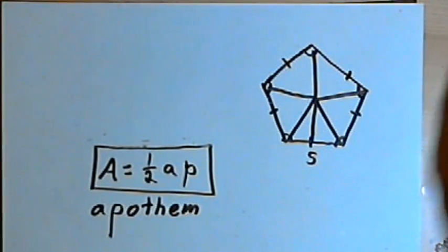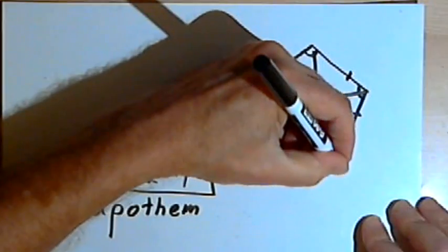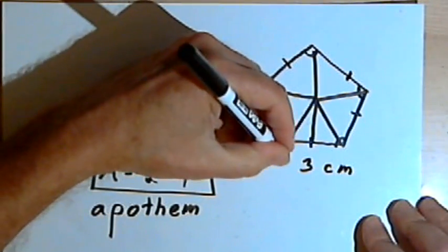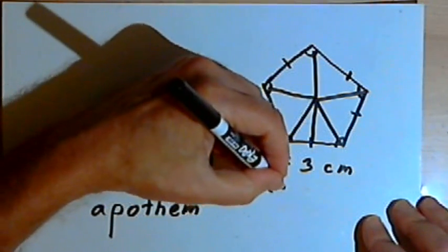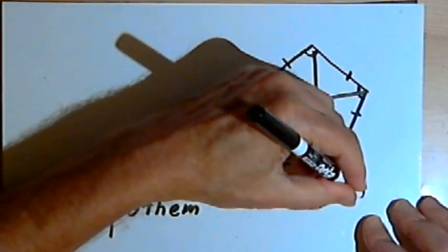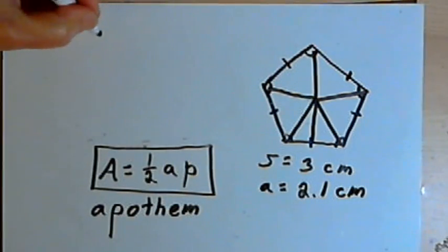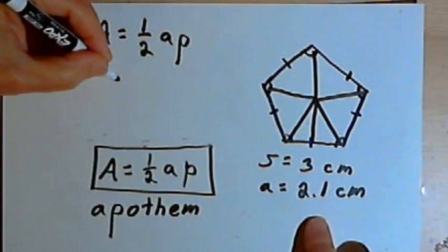So let's say that the side is 3 centimeters. So S equals 3 centimeters. And we'll say that the apothem is about 2.1 centimeters. So all we have to do is start with the general formula, area equals one-half AP, and then just plug these numbers in.